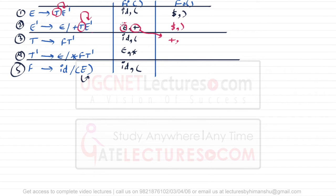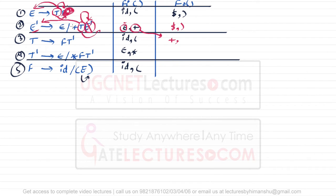Epsilon cannot be in the FOLLOW. If we replace E' with epsilon, then E derives T, so the FOLLOW of the left-hand side — which is FOLLOW of E — also becomes FOLLOW of T. FOLLOW of E' and FOLLOW of E both contain dollar and closing bracket. Hence, FOLLOW of T is plus, dollar, and closing bracket.